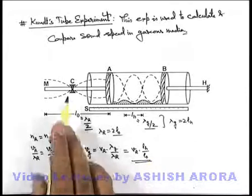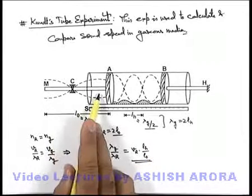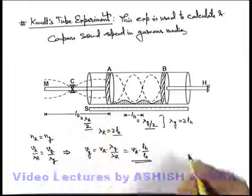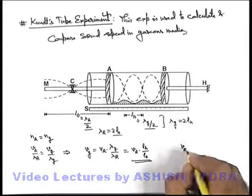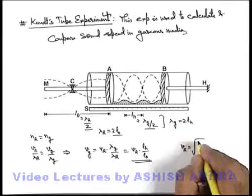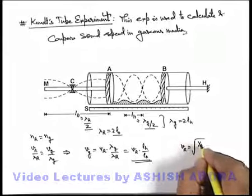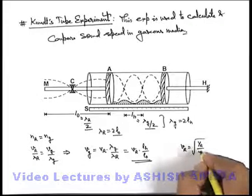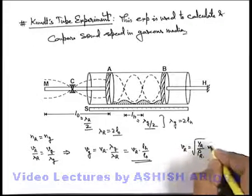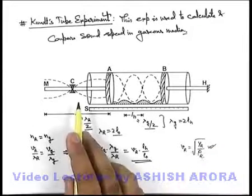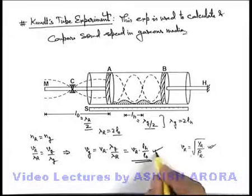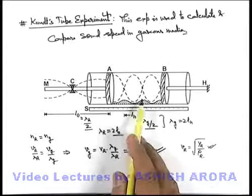And in the rod, the velocity of longitudinal waves can be easily calculated as V-r equals the square root of Young's modulus for the material of the rod divided by the density of the rod. This can be calculated using the data of Young's modulus and density of the metal used, and substituting here we get the speed of sound in the gaseous medium.